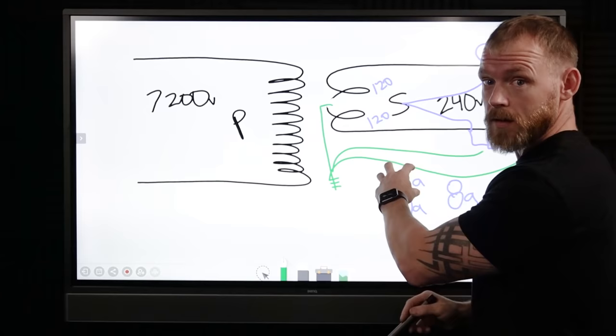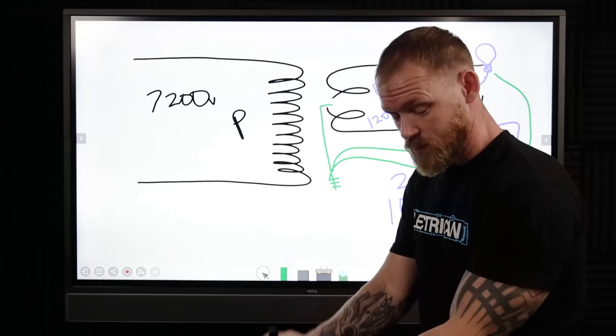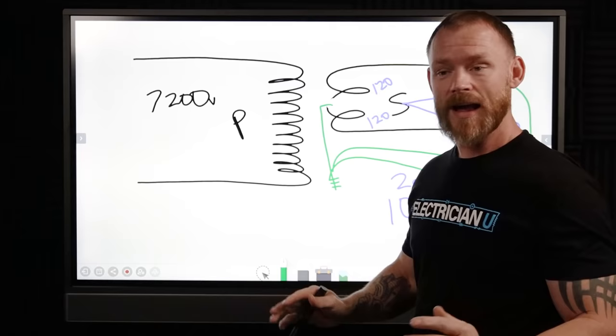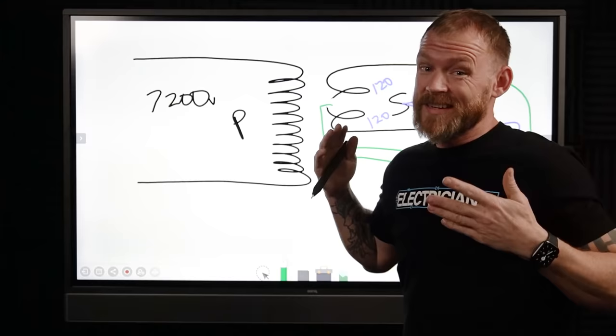At our service we have a thing called a grounding electrode conductor, which is a conductor that goes to an electrode in the earth, which is also grounding the system. But that's where these terms get kind of confusing. So let's just understand what a neutral is: it's really just another ungrounded conductor, but it is intentionally grounded so we call it the grounded conductor in code.